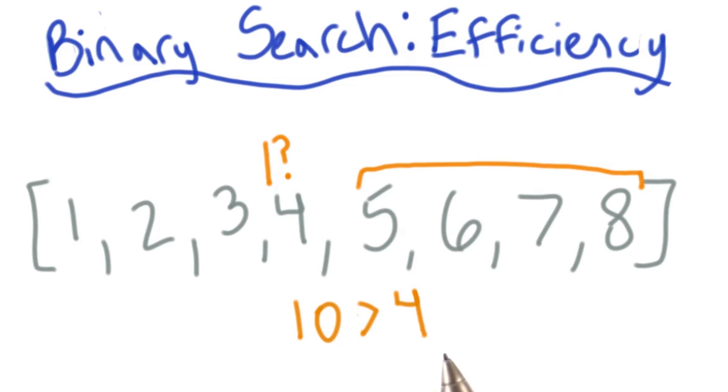Again, we have an even number of elements in our array, so we're going to pick the number on the left of the middle and start from there. Okay, since 10 is greater than 6, yet again we get to cut our array in half and deal with just the top.